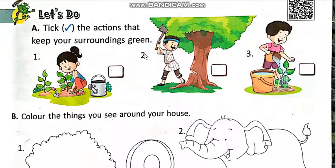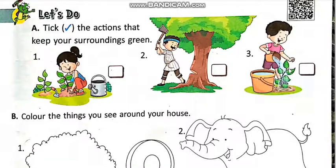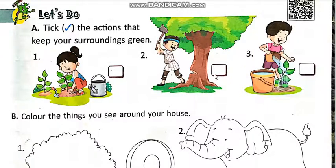Students, what do you think? Koon sa action thik hai? Number 1 and number 3. Number 1 mein girl plant laga rahi hai, aur number 3 mein boy plants ko paani de raha hai — is tarah se humari surroundings green raha sakti hai. Is liye hum option 1 aur option 3 per tick lagayin, aur option 2 ko aise hi rehne dhenge.